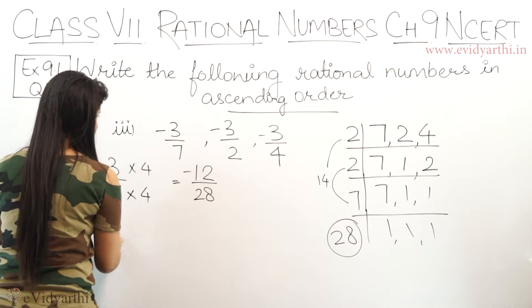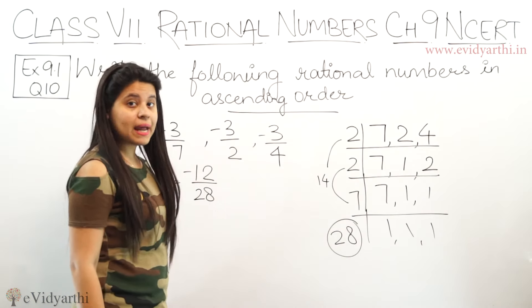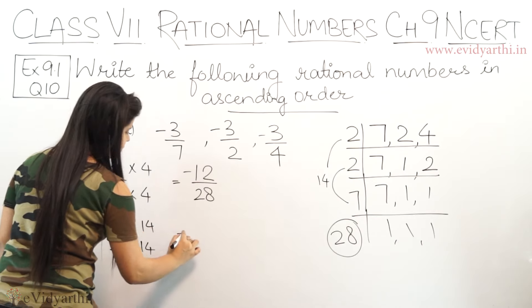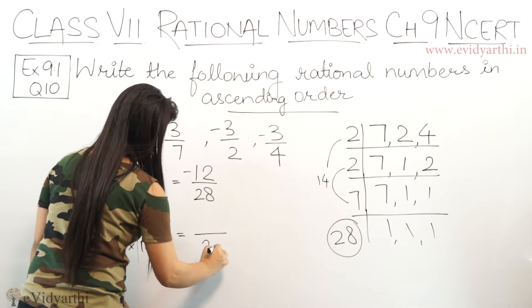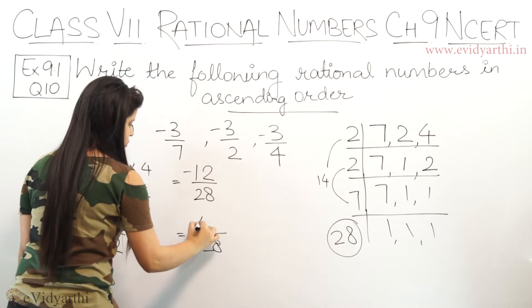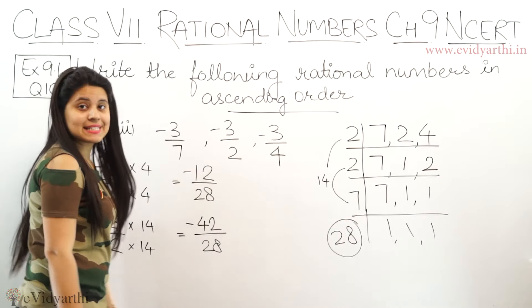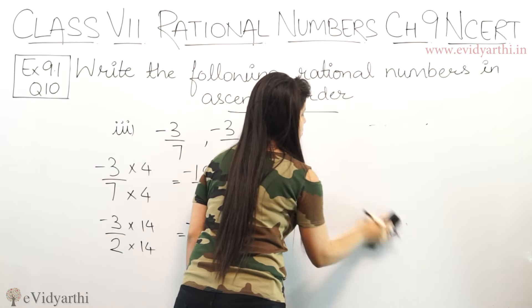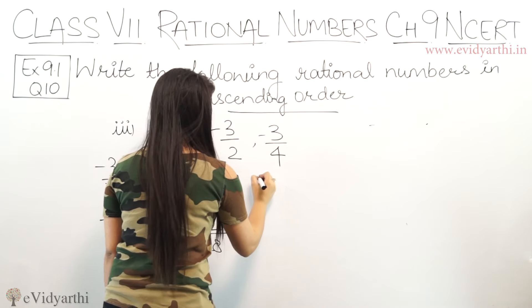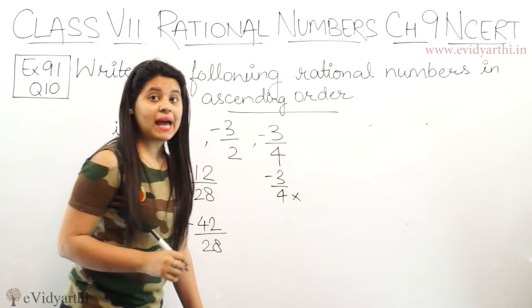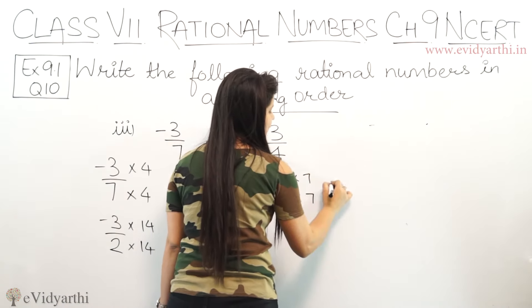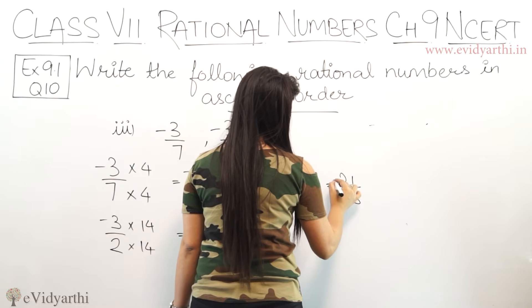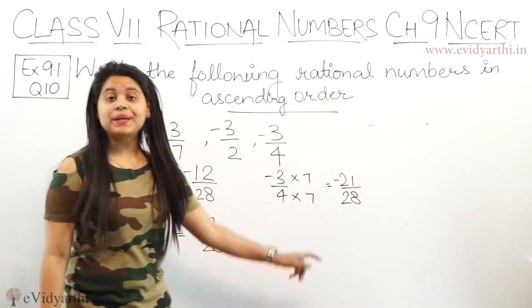Next, minus 3 upon 2. अब 2 को किससे multiply करेंगे कि 28 आए? 14 से, because 14 × 2 = 28. This will be 14 × 2 = 28, and 14 × 3 = 42, and again minus का sign. So यह होगा minus 42 upon 28. Then we have minus 3 upon 4. 4 को किससे multiply करेंगे? 4 × 7 = 28. So 4 × 7 = 28, and 3 × 7 = 21, minus का. So यह होगा minus 21 upon 28. अब तीनों के denominators same हो गए हैं.